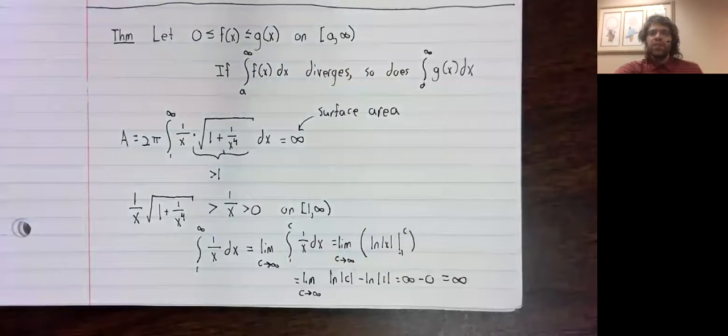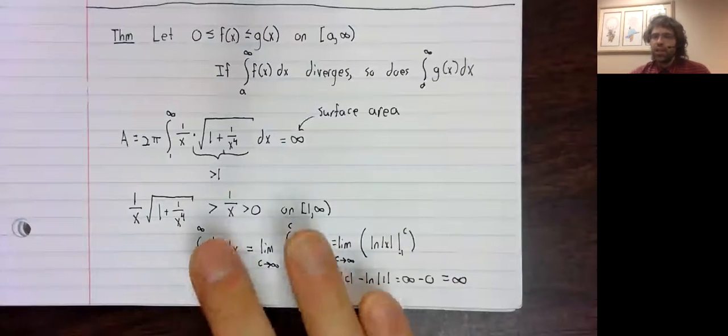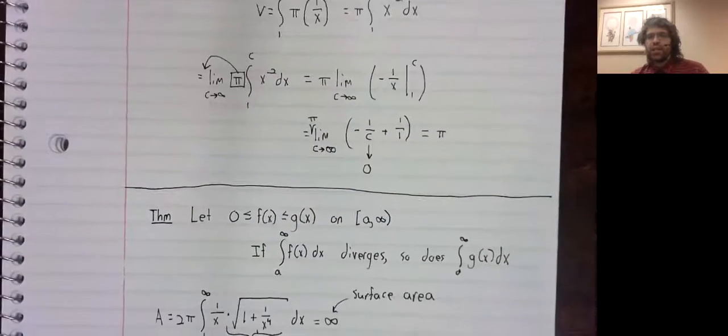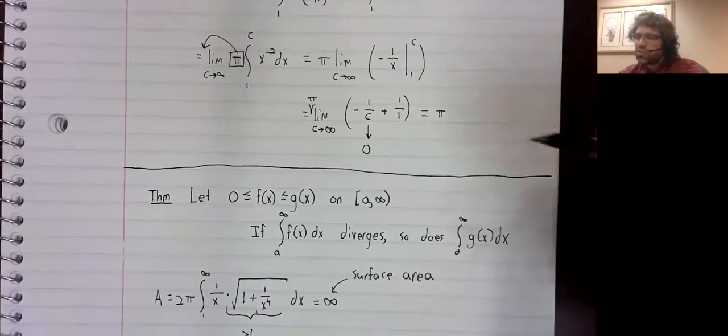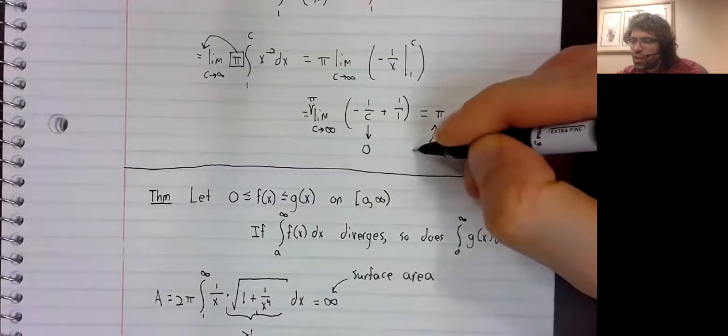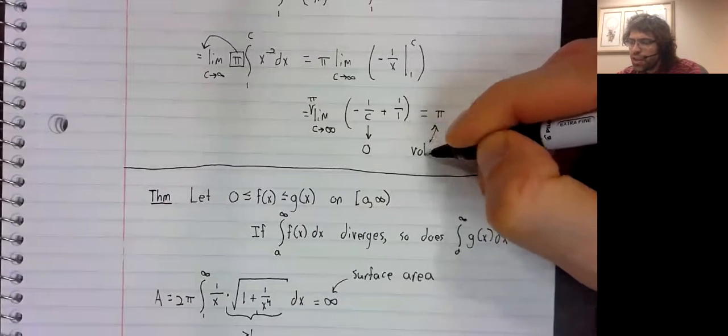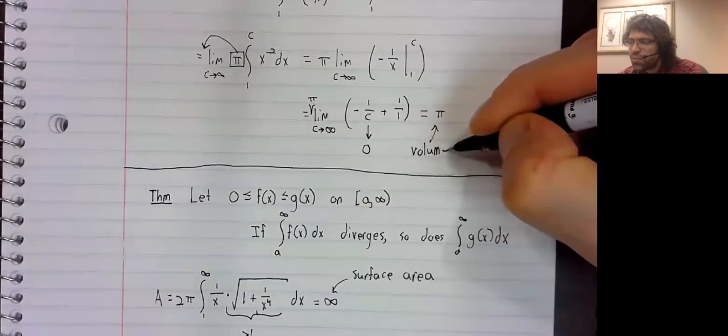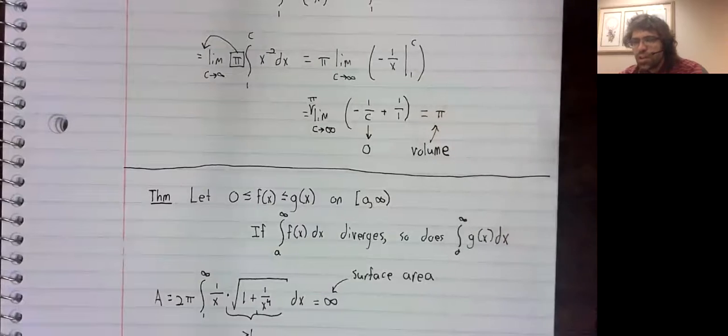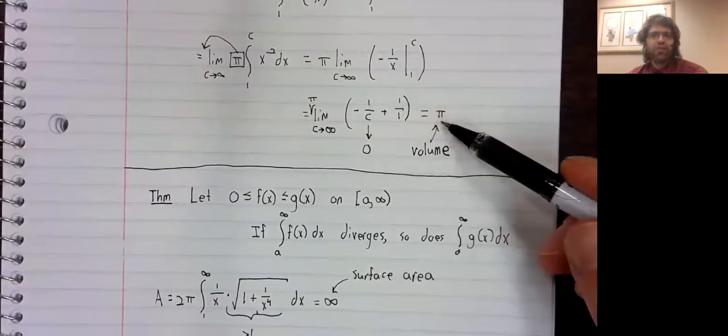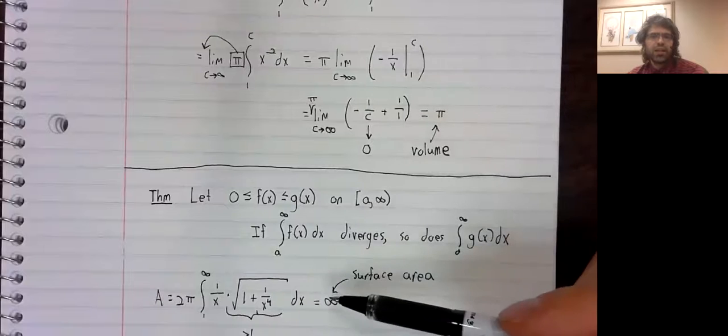I said at the beginning of this video, that when we have infinite objects, we can't always trust our intuition. But it might not be immediately obvious what's so unintuitive about this. But we have a finite volume and an infinite surface area.